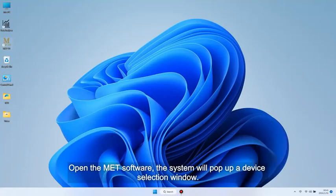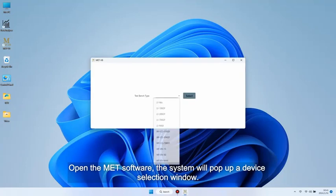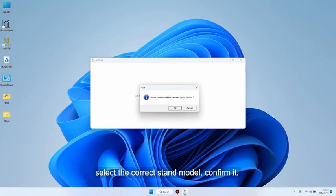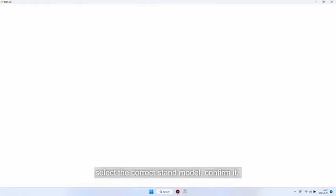Open the MAT software. The system will pop up a device selection window. Based on the purchased device model, select the correct stand model, confirm it, and click the confirm button to enter the main interface.